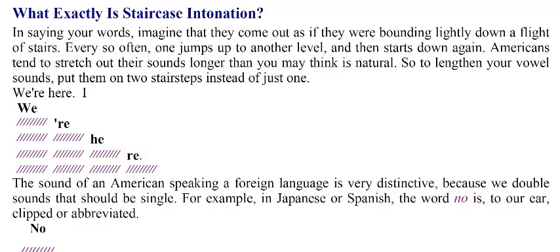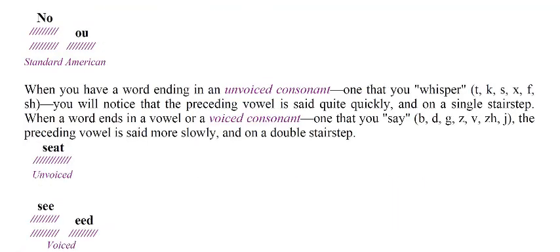The sound of an American speaking a foreign language is very distinctive because we double sounds that should be single. For example, in Spanish or Japanese the word 'no' is clipped — 'no' — whereas standard American stretches it out: 'nooo.' When you have a word ending in an unvoiced consonant — one that you whisper — the preceding vowel is said quite quickly and on a single stair step. When a word ends in a vowel or a voiced consonant — one that you say aloud — the preceding vowel is said more slowly and on a double stair step.